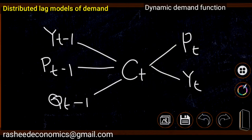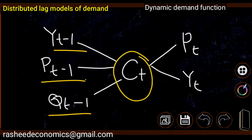In the dynamic demand function, we consider the role of previous income, previous price, and quantity consumed in the previous period. These factors influence the current consumption pattern. The consumption of the present period is influenced by the variables of the previous period.